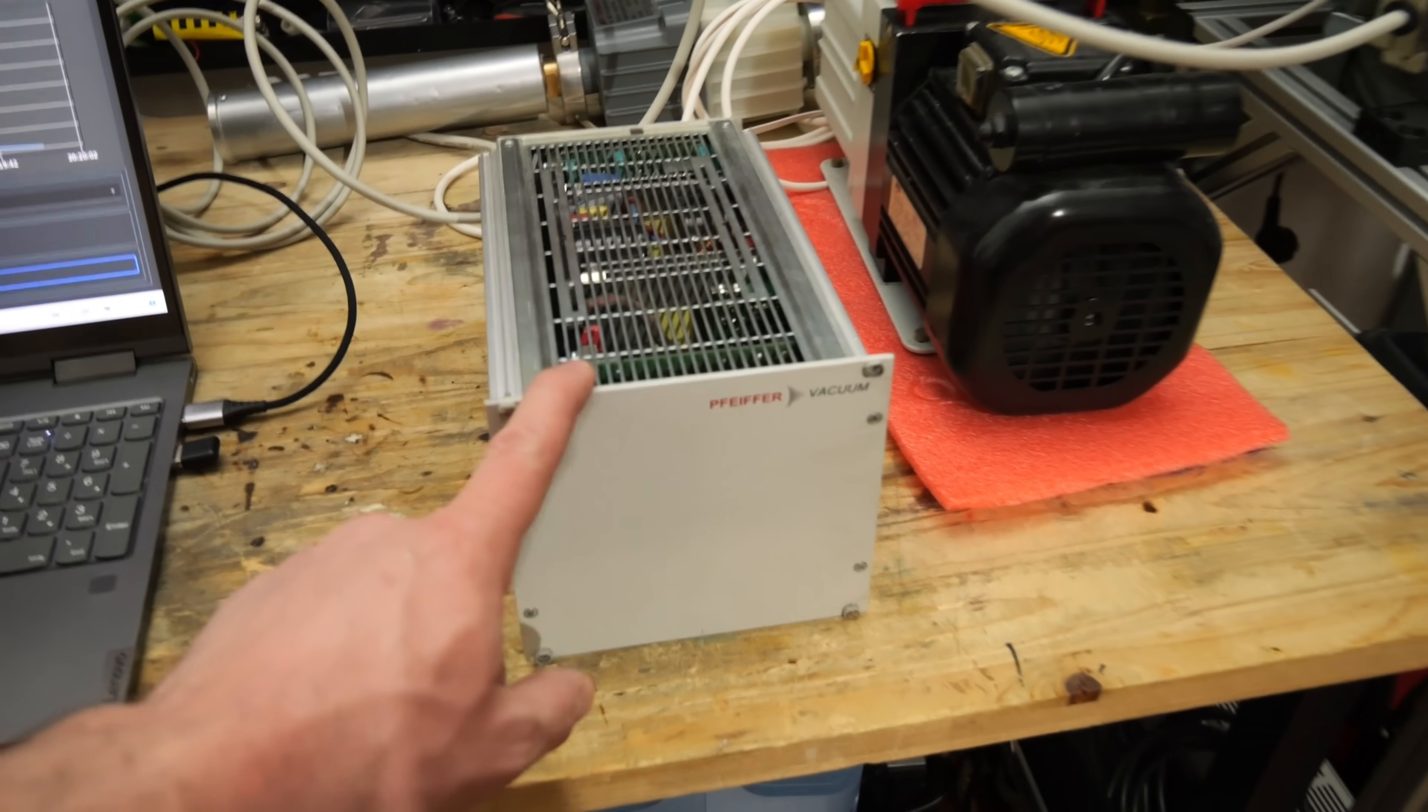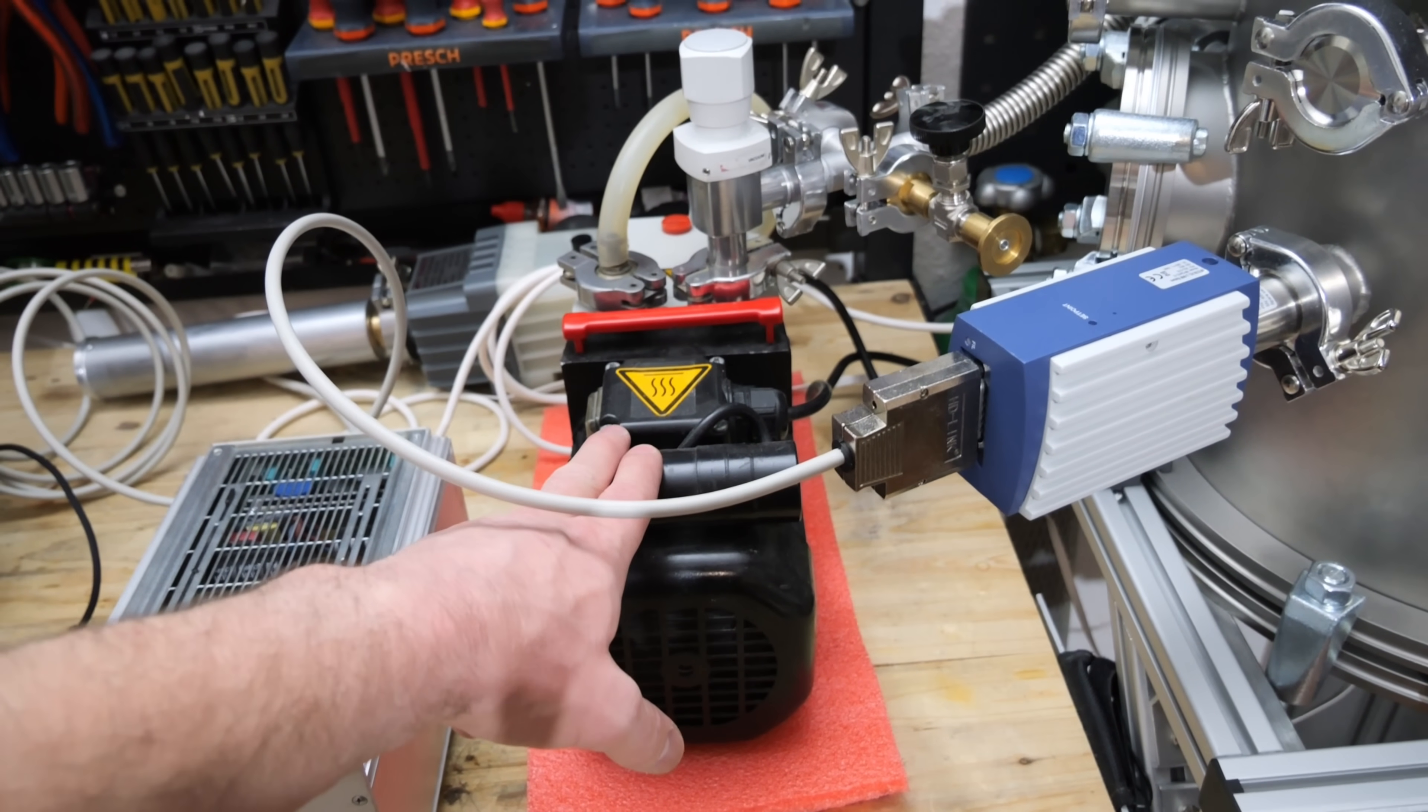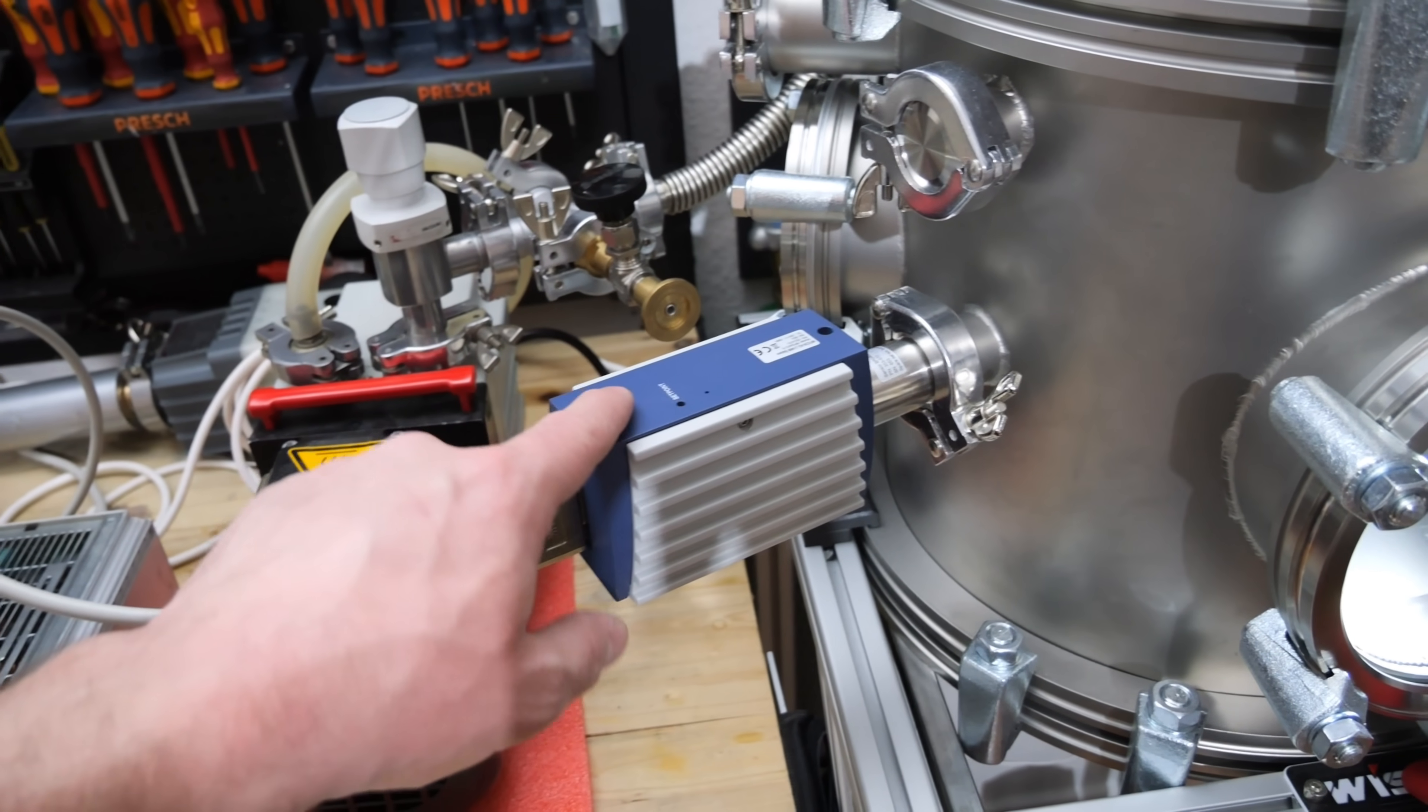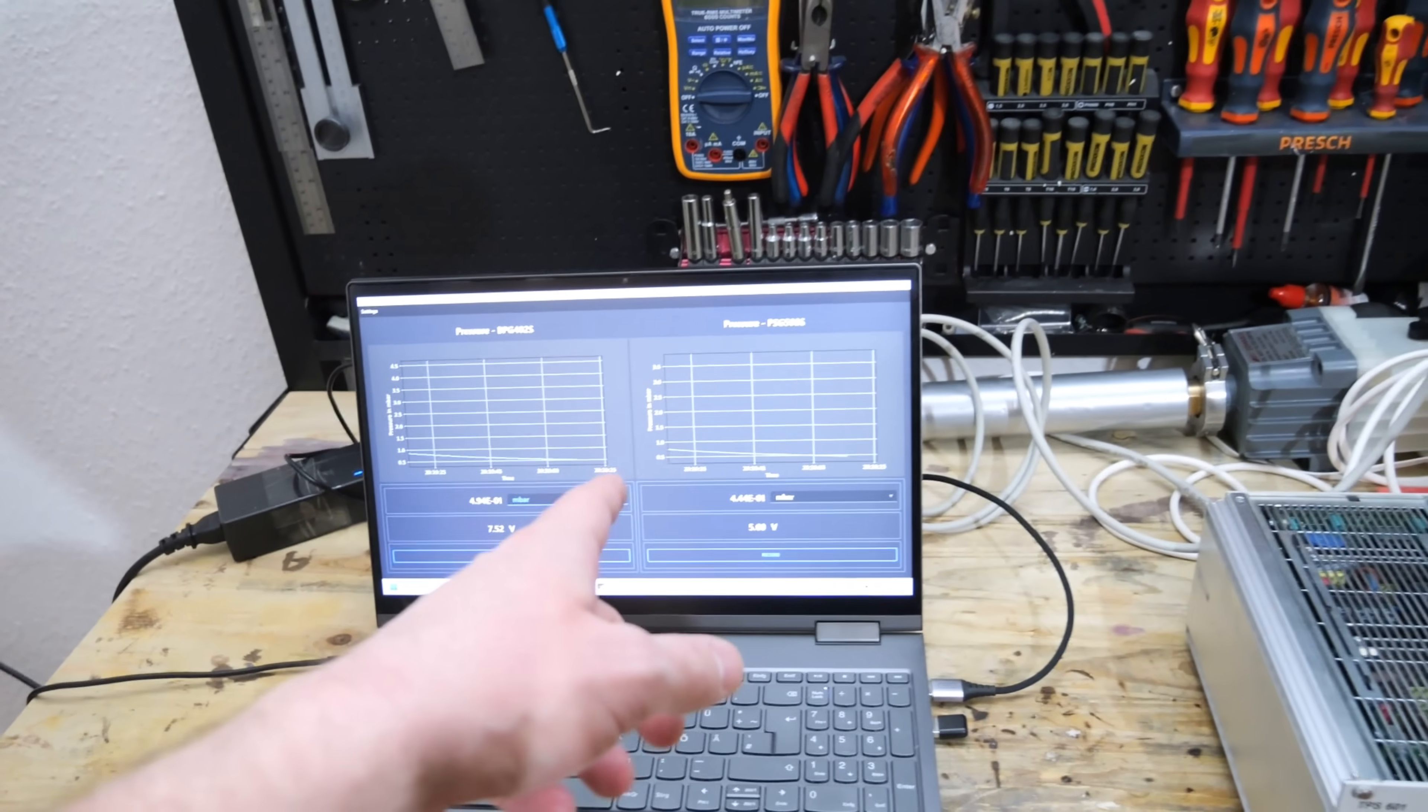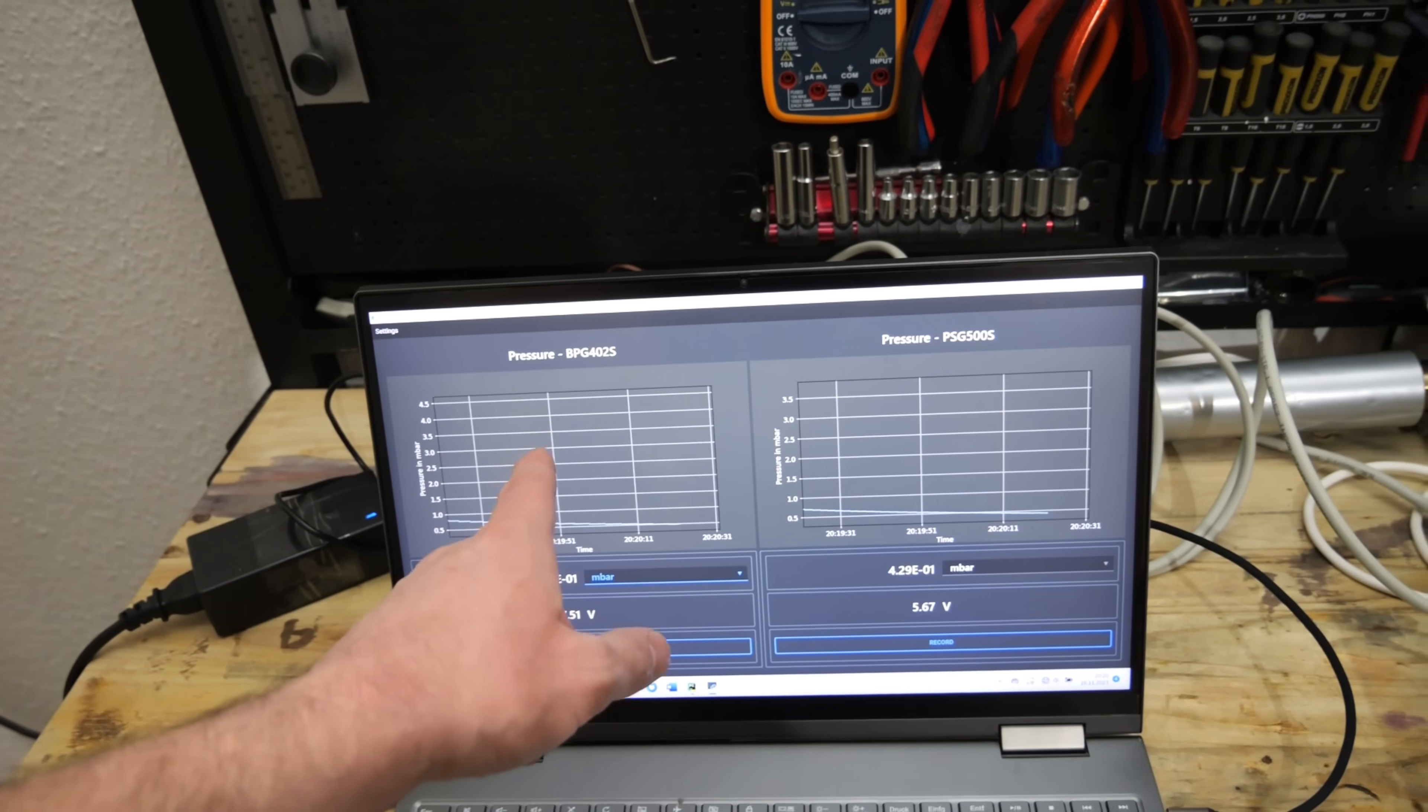Here you can see the controller for the huge turbo molecular pump. I'm using my Pfeiffer rotary vane vacuum pump as a roughing pump, and I have two vacuum gauges. The BPG402S and the PSG500S at the bottom right there. The PSG500S won't be able to record pressures at a certain point, so then I'm going to rely on the BPG.